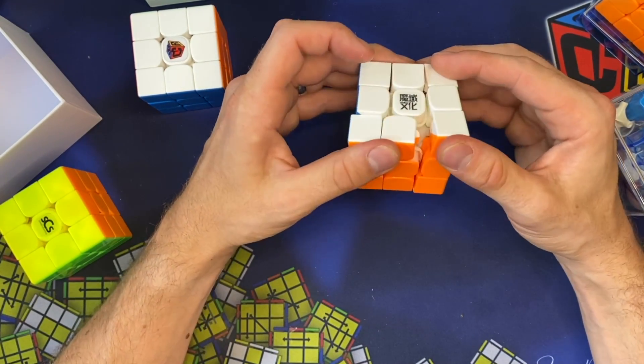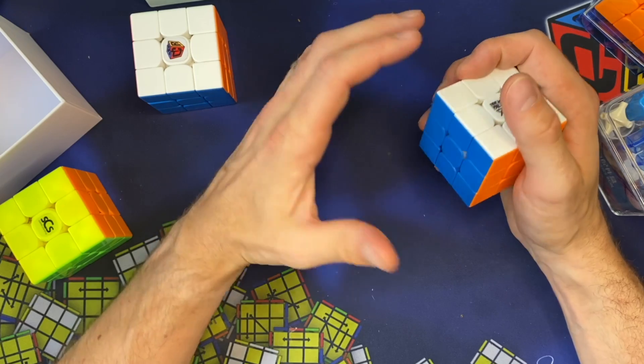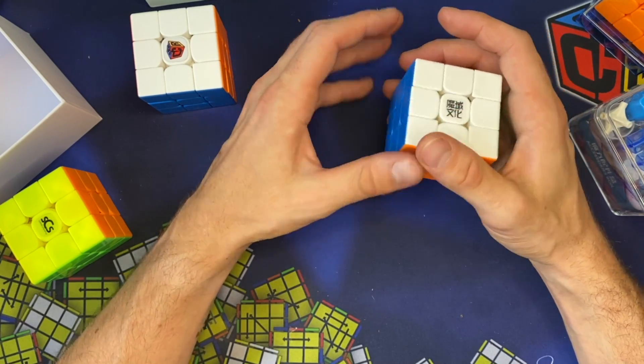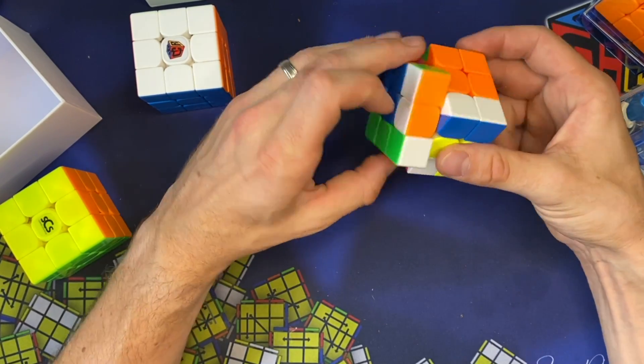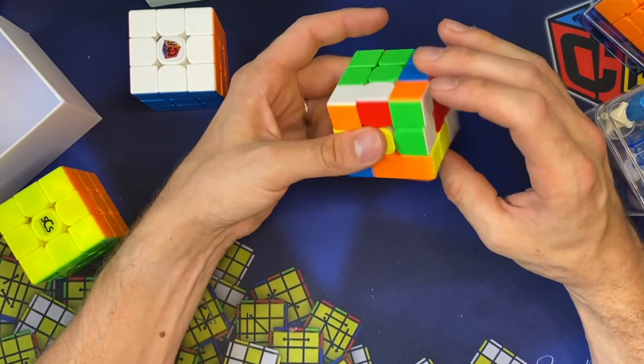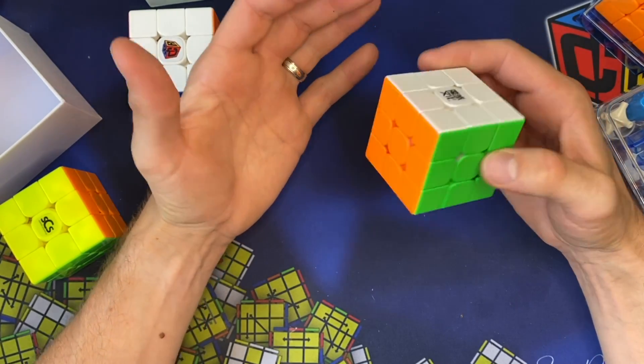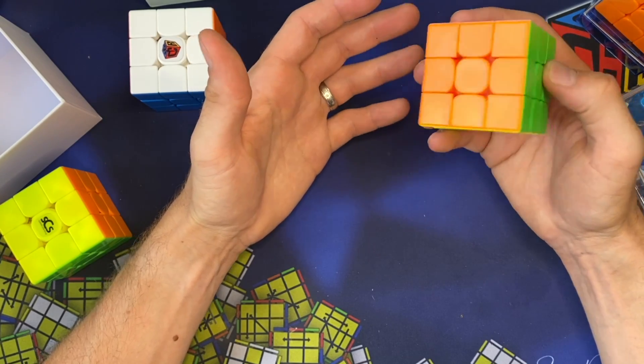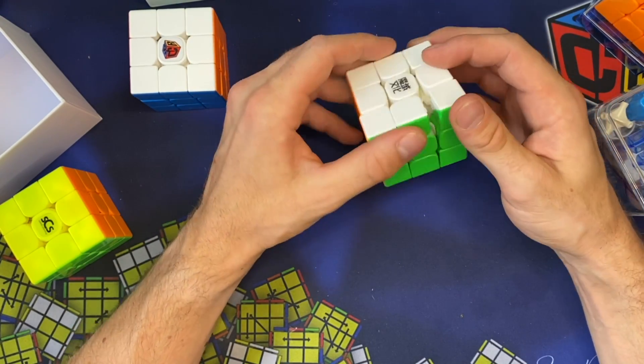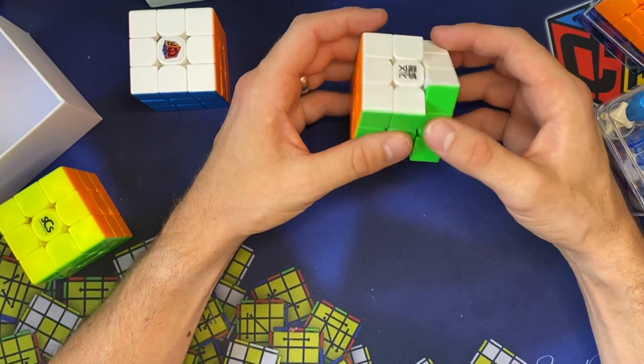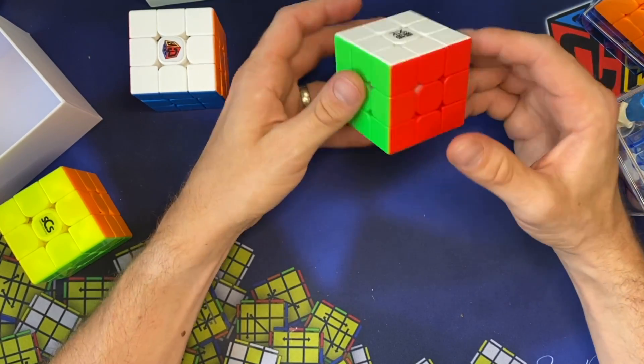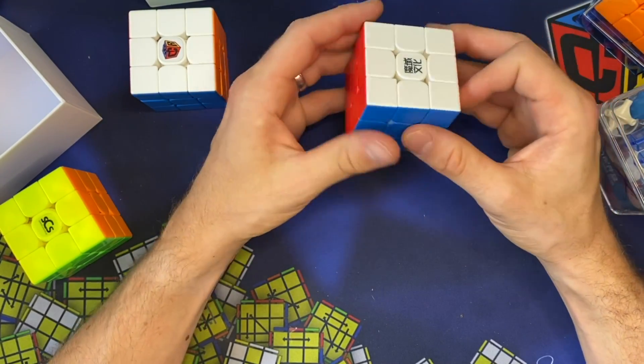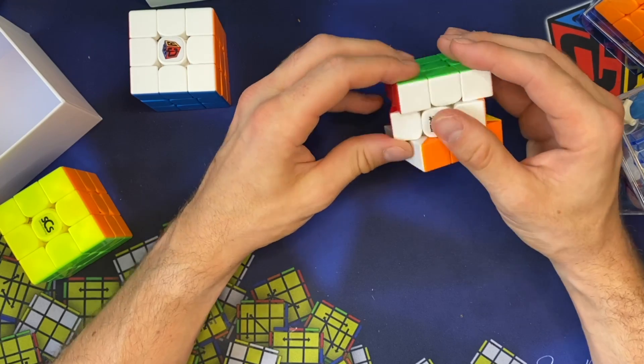It almost feels like I'm turning a variation on air because of just how light it feels. Or I don't mean this in a bad way, it feels like I'm turning a little magic. Like a magnetic little magic with just a slightly different piece shape. So it's not as blocky. It's a good puzzle though. It definitely feels very light and flexible.